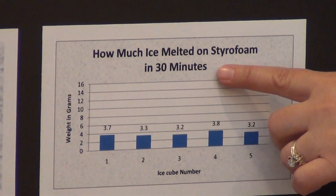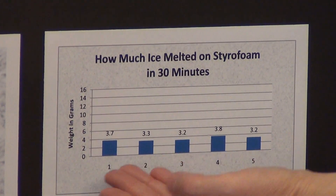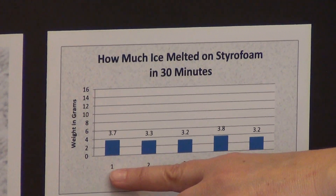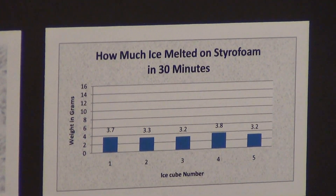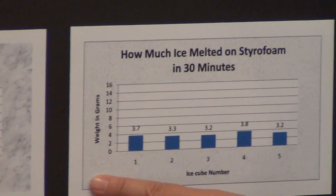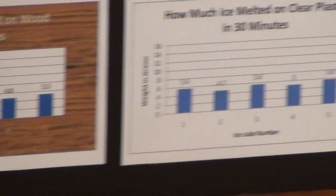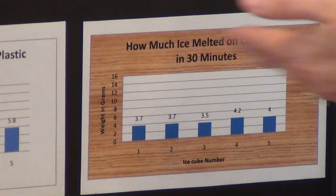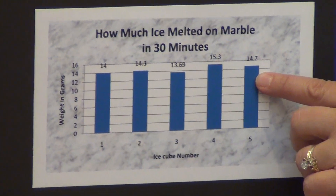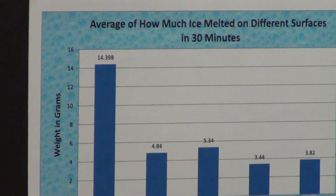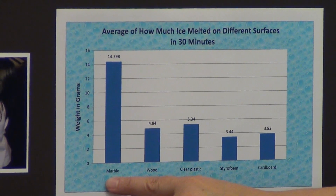The second chart showed how much ice melted on styrofoam in 30 minutes for the five different ice cubes. Styrofoam didn't melt very much because it's an insulator — it had around three grams of ice melted. She also chose to use different backgrounds for fun: the background looked like styrofoam, the marble background looked like marble, as well as the wood, plastic, and cardboard. Then she took each of these charts and found the average — the average for marble was 14.398 grams melted across the five ice cubes.